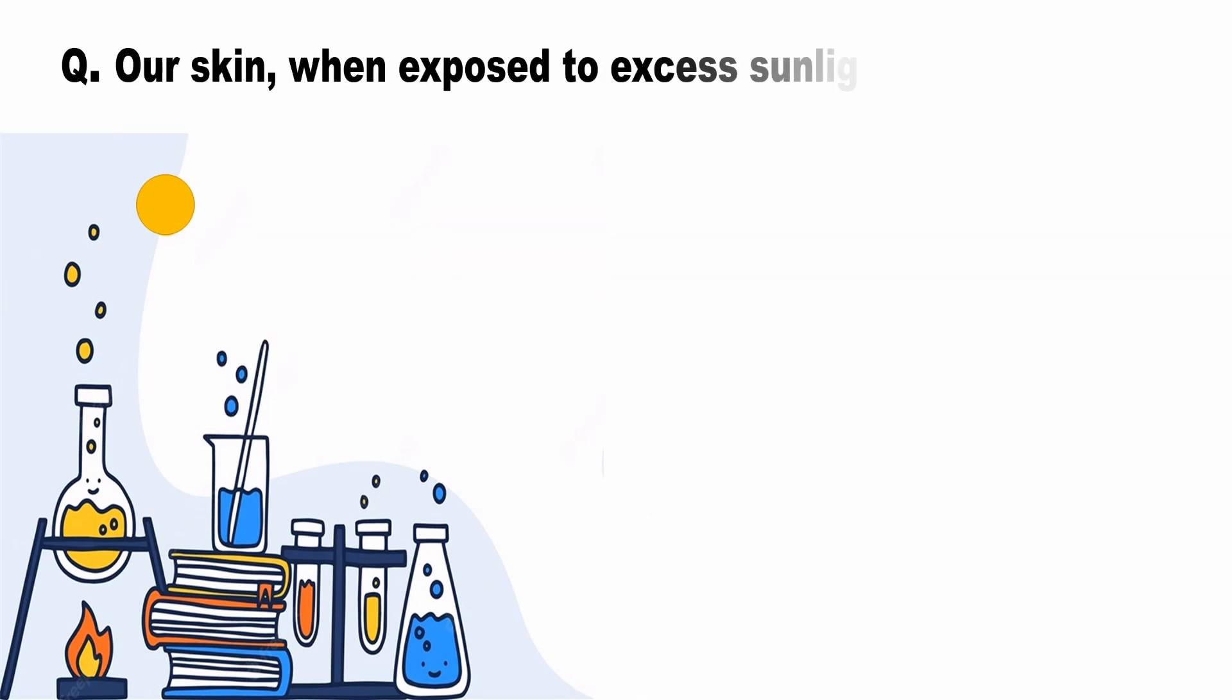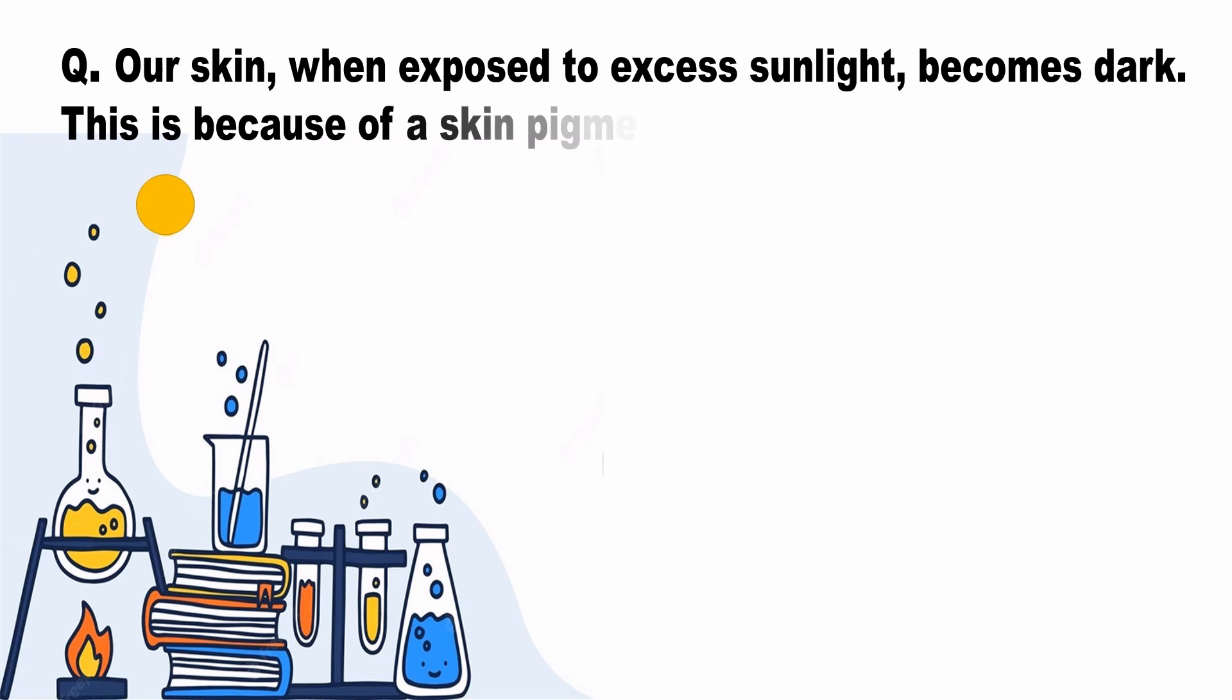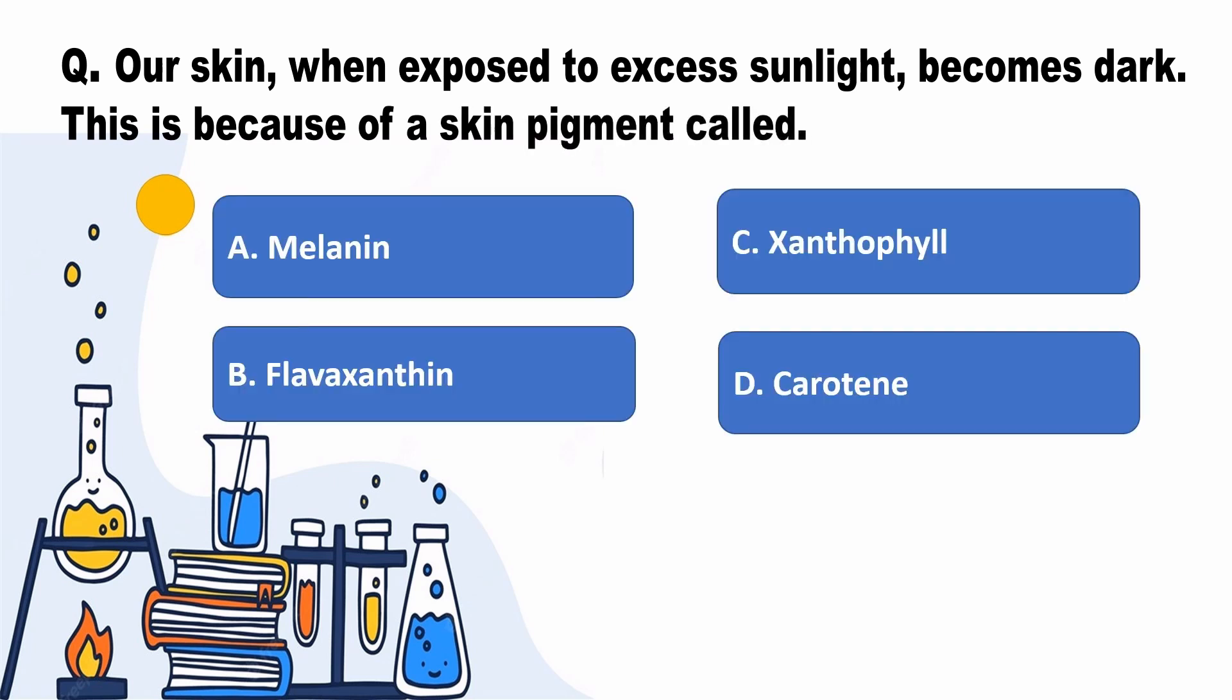Our skin, when exposed to excess sunlight, becomes dark. This is because of a skin pigment called? Answer A, Melanin.